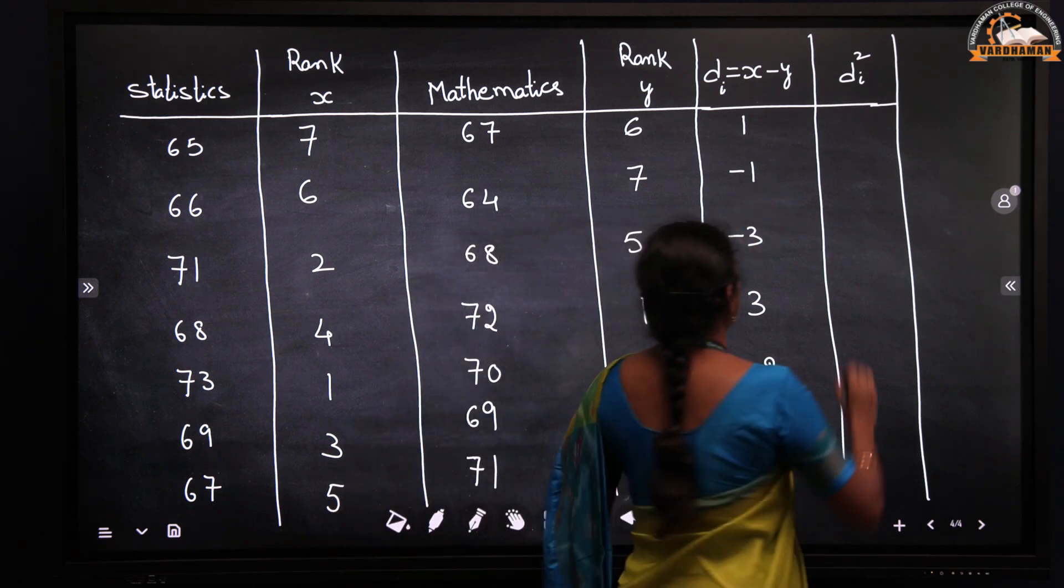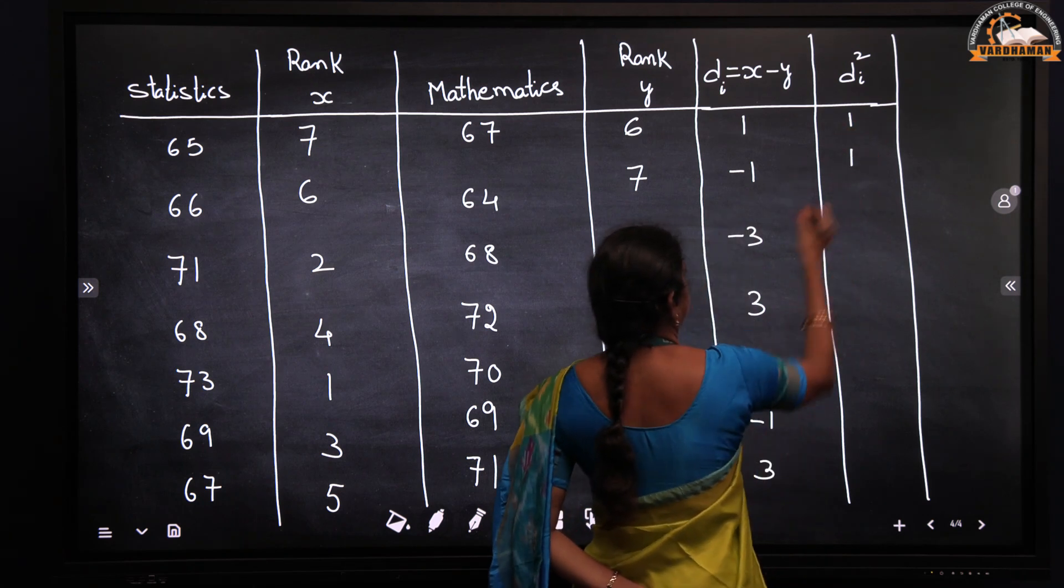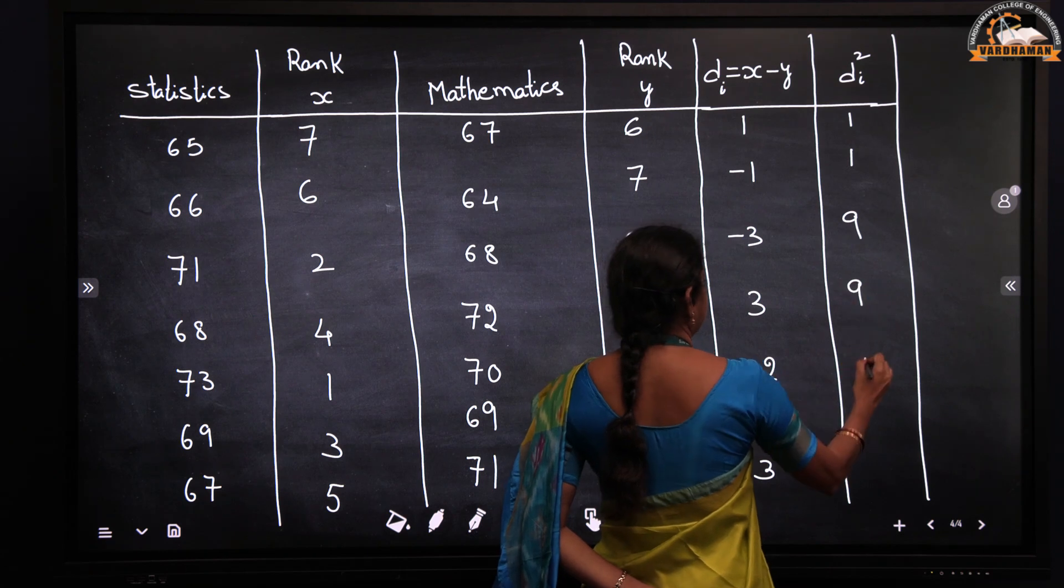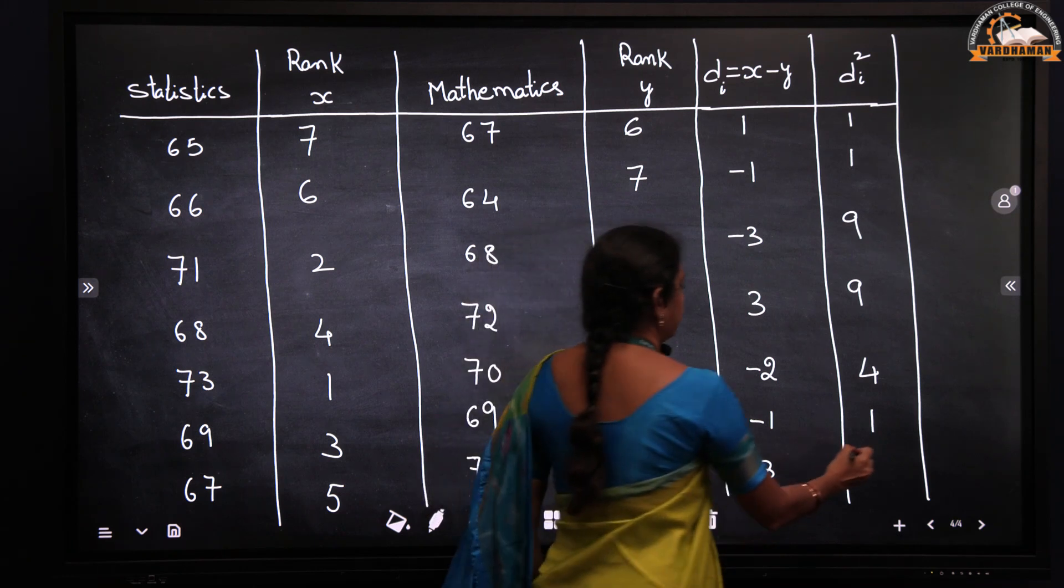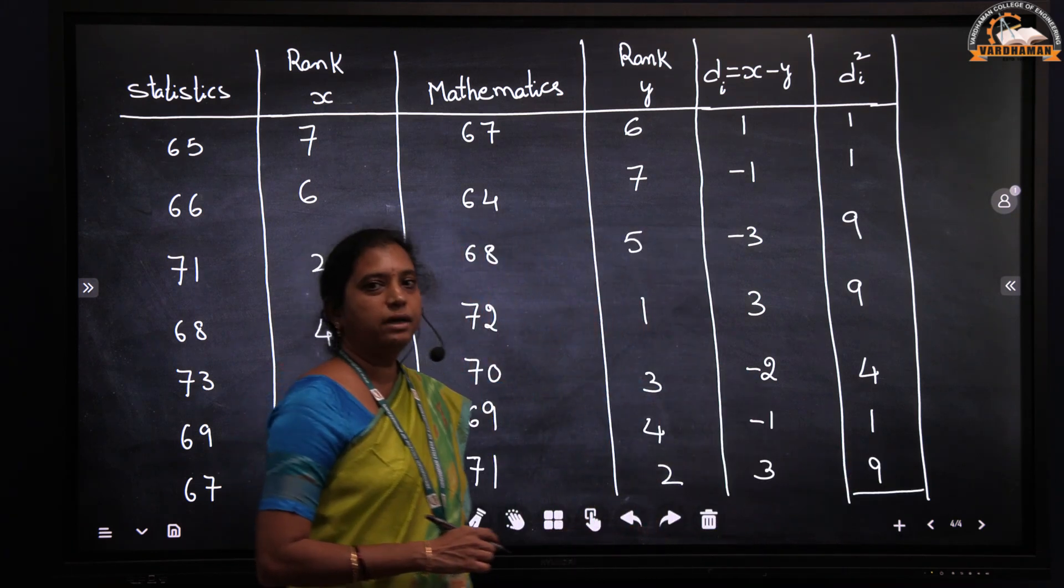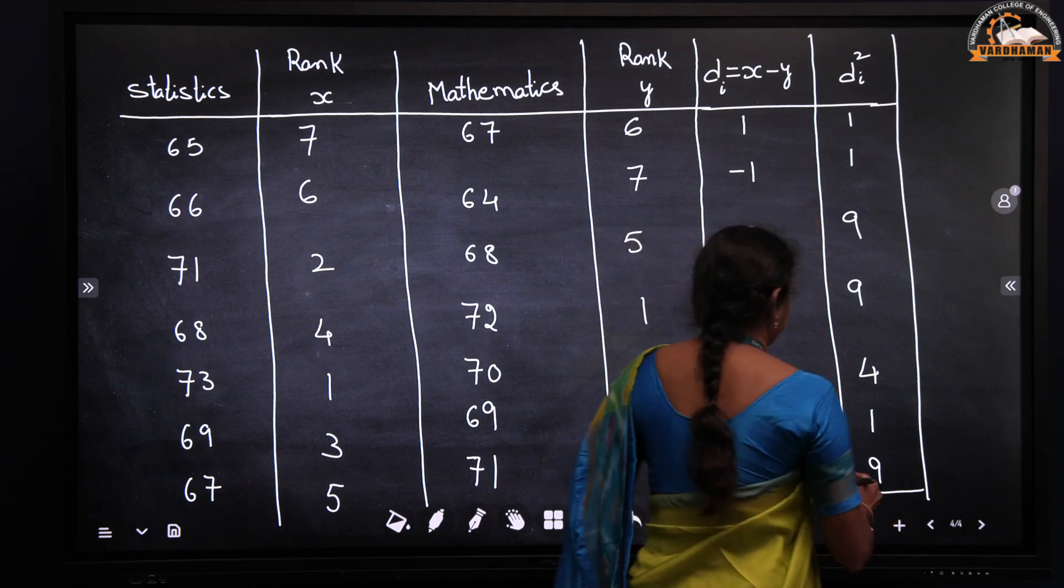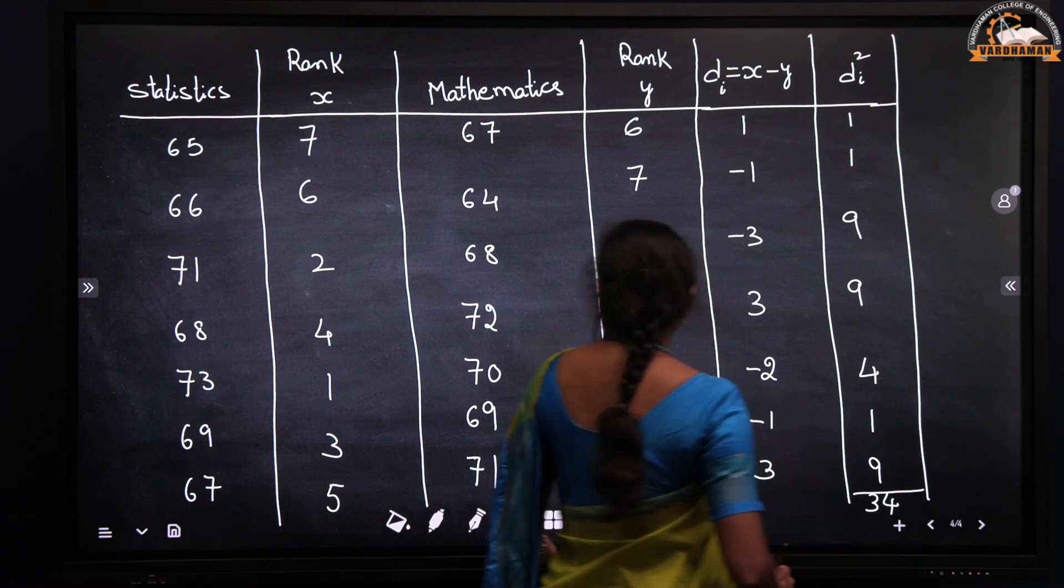So 1 square is 1, minus 1 square is 1, minus 3 square is 9, 3 square is 9, minus 2 square is 4, minus 1 square is 1, and 3 square will be equal to 9. After finding di square, we sum up all the values. So the total will be 34. Summation di square is equal to 34.